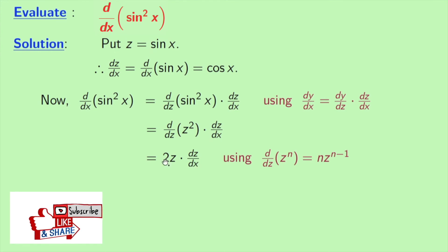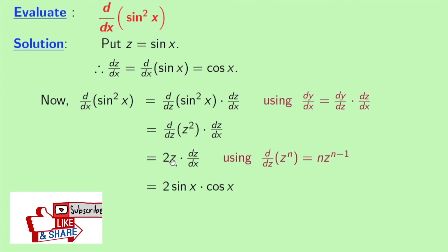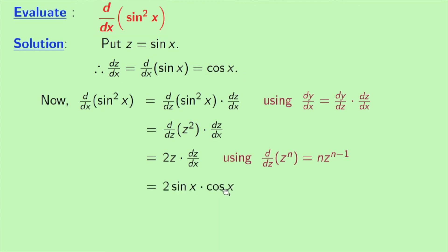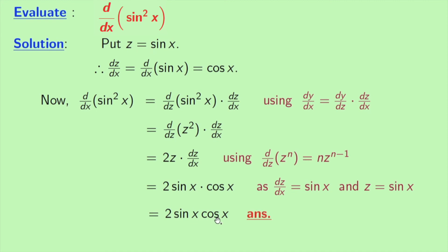Now as z equal to sin x and dz/dx equal to cos x, so we get 2 sin x cos x. So 2 sin x cos x is our final answer.